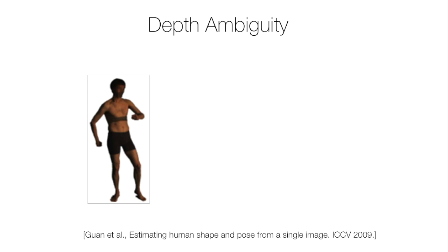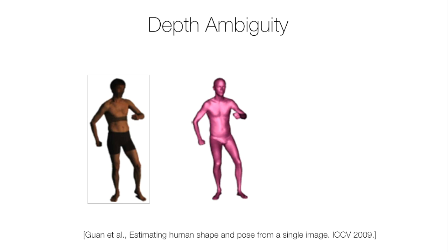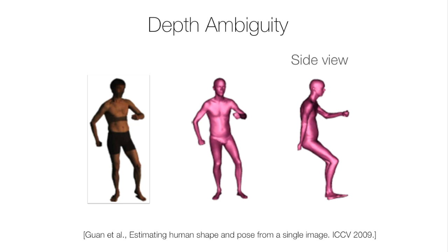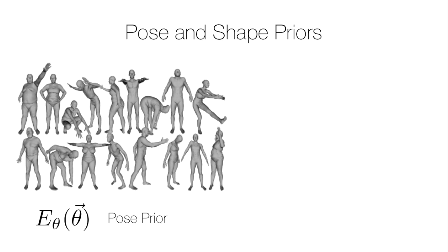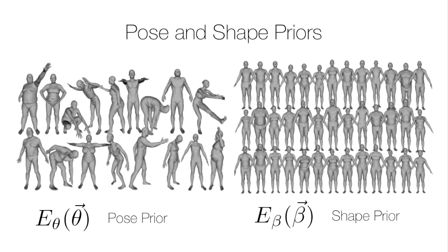For example, given this image of a man standing, this model looks like a reasonable explanation, but if we see it from another side, we see that the knees are bent, even though they shouldn't be. To overcome this, we need a good prior. So, we learn a multi-modal pose prior from nearly one million poses in the CMU mocap dataset. We also encode a prior on joint angle limits. For the shape prior, we use SMPL's PCA space, which is obtained from thousands of scans. This captures the statistics of human body shapes very well, and is much richer than a prior on 3D skeletons.